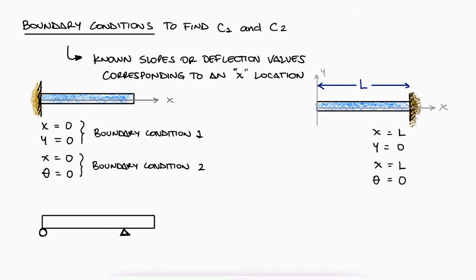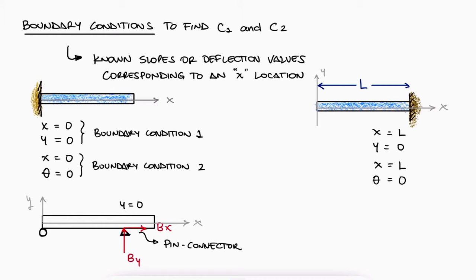Other supports, like pin connectors, allow the member to freely rotate. The reaction forces at the pin connector will prevent it from moving in any direction, including y. For this reason, the boundary condition at the pin connector location is that y equals zero, for whatever value of x corresponds to that pin's location. So for example, if the distance from the left to the support is a, we would say at x equal to a, y is equal to zero. To learn more about all possible boundary conditions, make sure to watch the 2-minute example videos linked in the description.